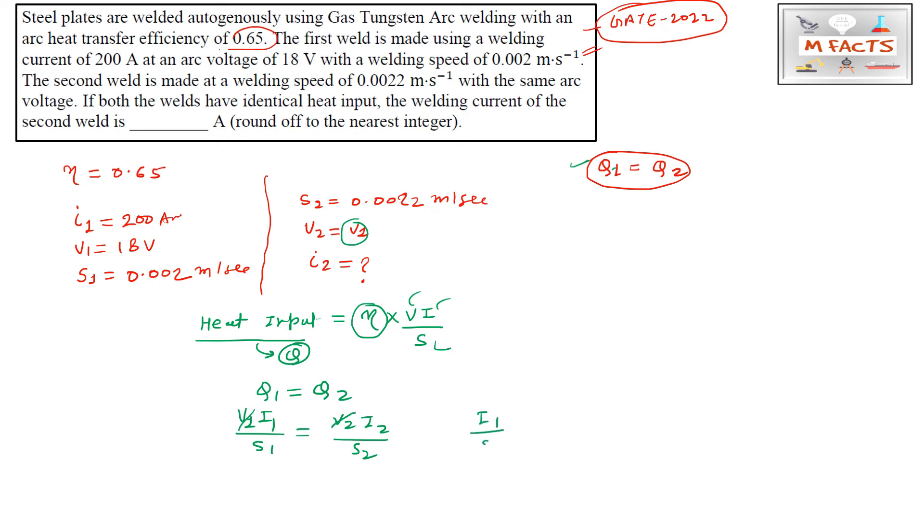So i₁ is 200, S₁ is 0.002, equals i₂ (which we need to find) over S₂ which is 0.0022. From here we can calculate i₂: i₂ = 200 × 0.0022 / 0.002, so i₂ equals 220 ampere. This is the correct answer for this question.